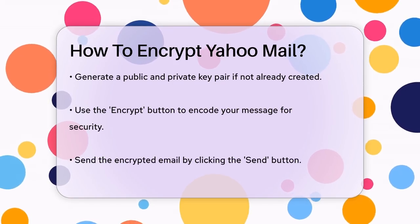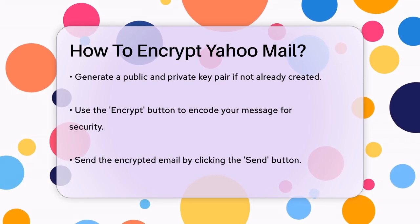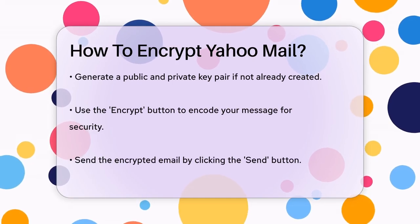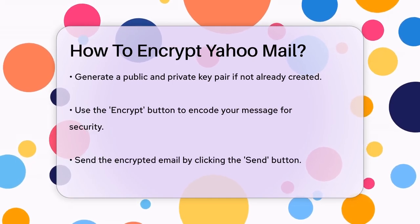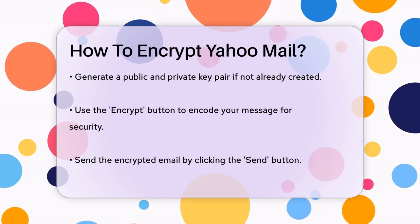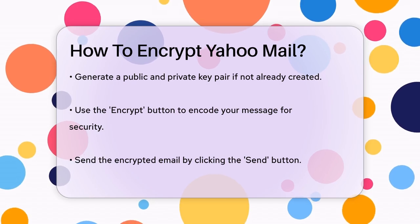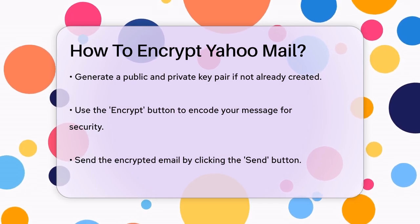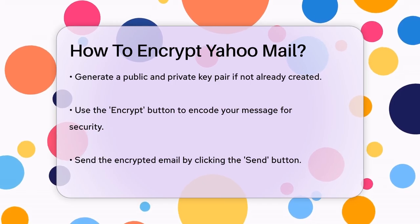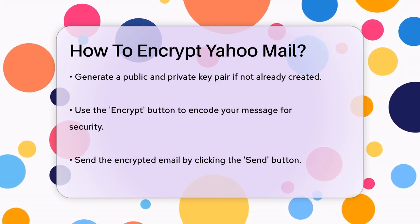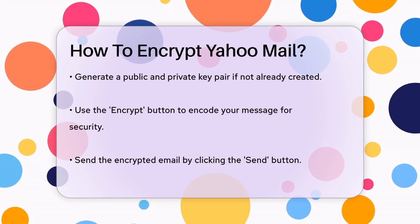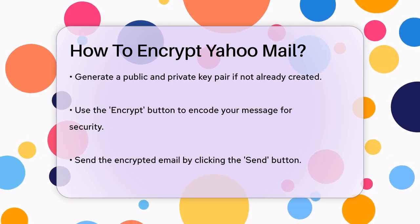Once you've set up your keys, you can encrypt your email by clicking the Encrypt button. This will encode your message so that only the recipient with the corresponding decryption key can read it. When you're ready to send the email, click the Send button. The recipient will receive the encrypted email and will need to use their own MailVelope setup to decrypt and read the message.